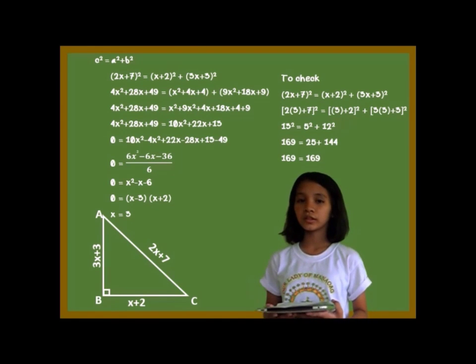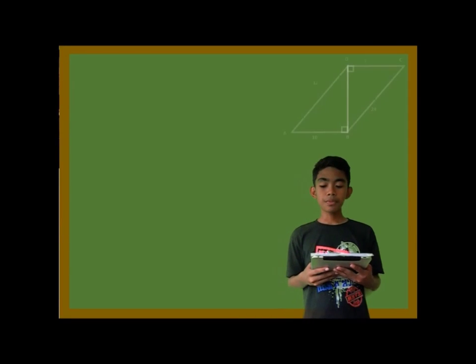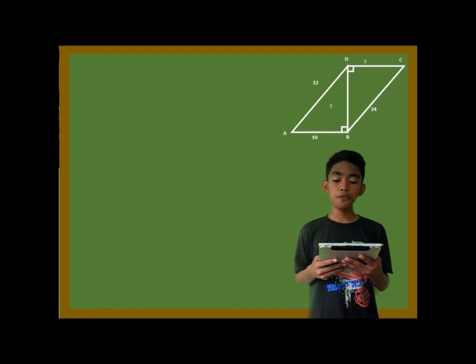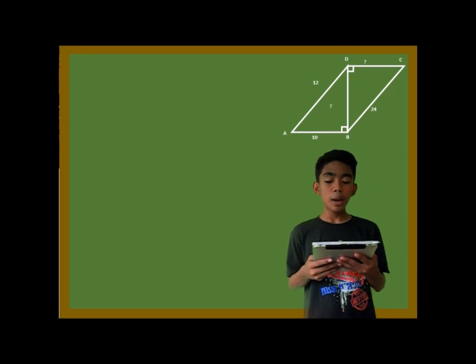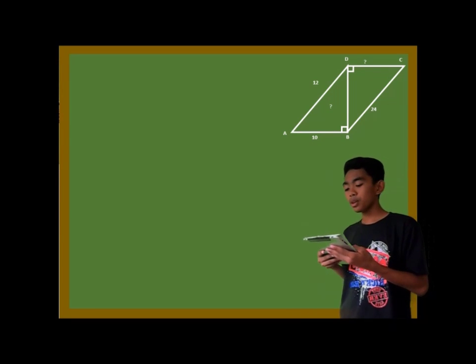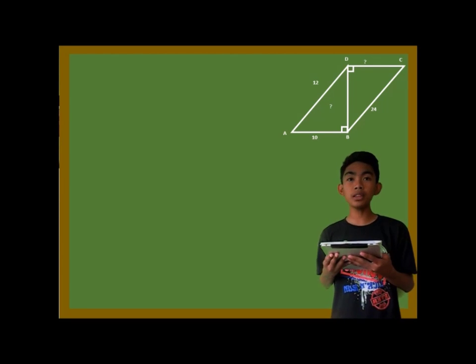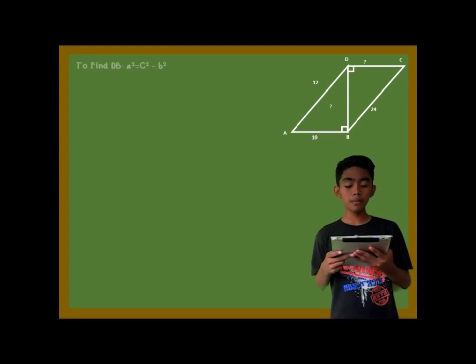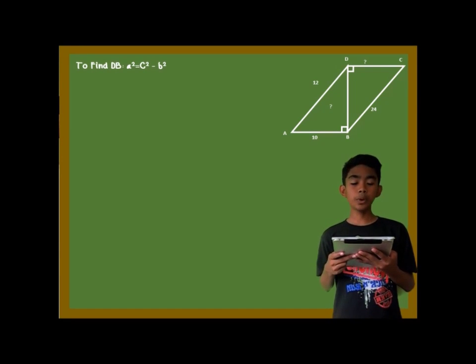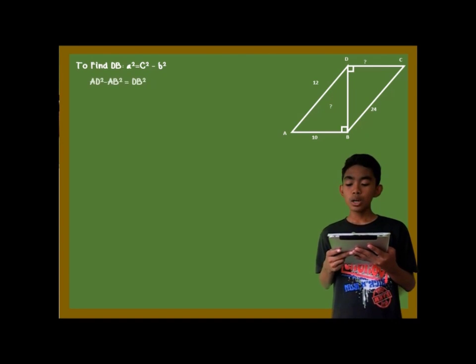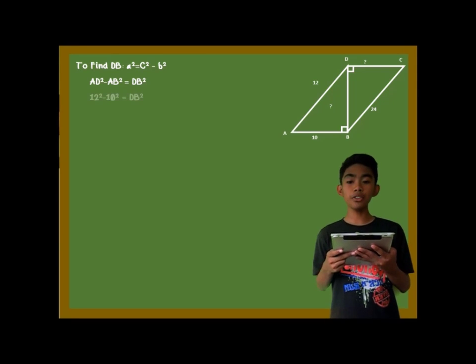13 squared is equal to 5 squared plus 12 squared, which gives 169 equal to 25 plus 144. 169 is equal to 169. So the sides are 5, 12, and 13. In this problem, we are asked to find DC. To find it, we first need to find DB because it is the other leg of triangle DBC, and we cannot find DC without first finding DB. To find DB, we will use the equation c squared minus b squared is equal to a squared.